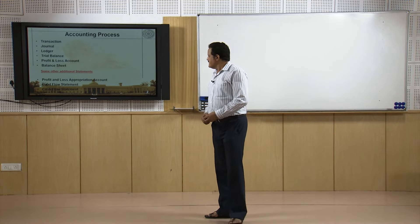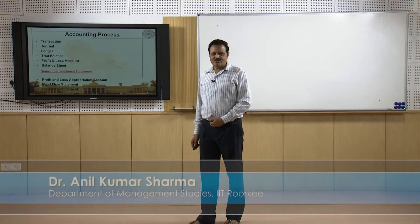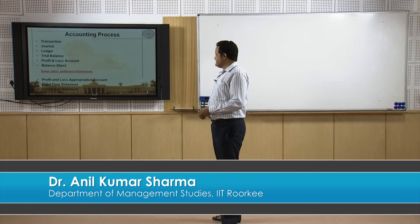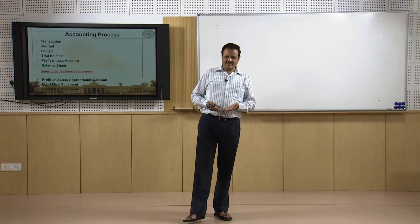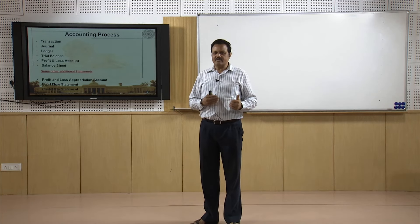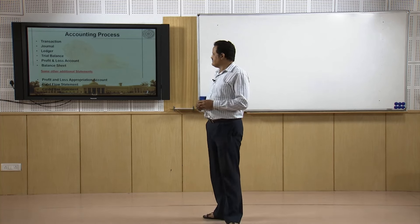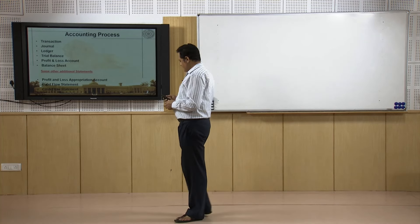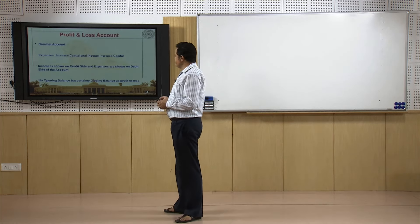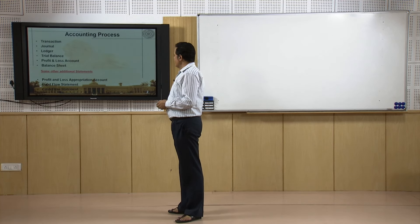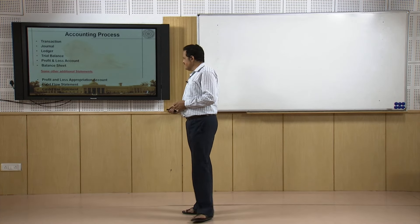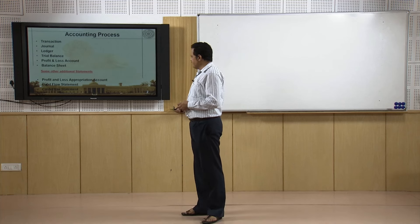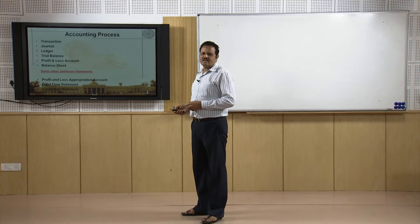Welcome all. In my last lecture we were talking about the accounting process — where the accounting process starts and where it ends. The accounting process starts with a transaction and ends with the balance sheet. After the balance sheet, a third statement is also required: the cash flow statement, prepared from the profit and loss account and balance sheet.